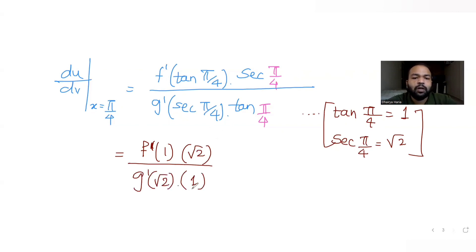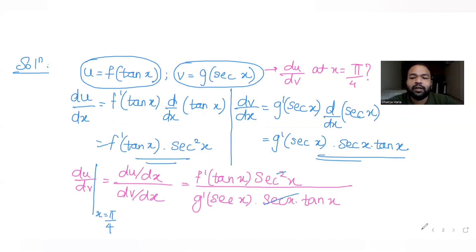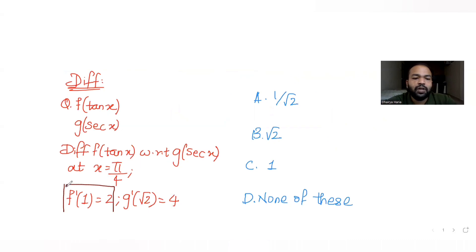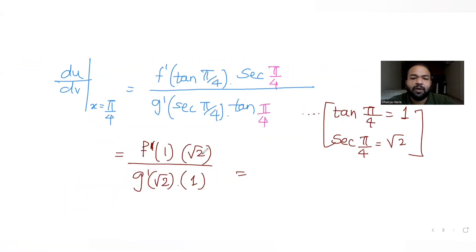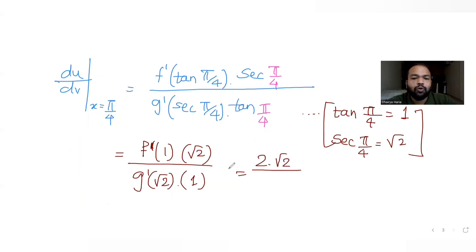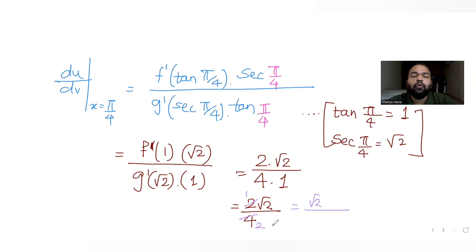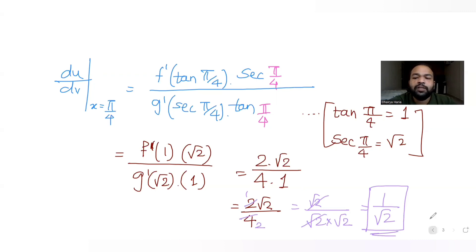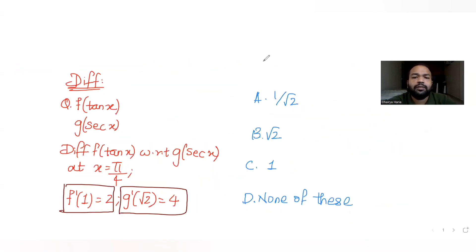We are given f'(1) = 2 and g'(√2) = 4. Substituting: (2·√2) / (4·1) = 2√2/4 = √2/2, which is equal to 1/√2. So the answer is 1/√2, which matches option A. That is the correct answer for this question.